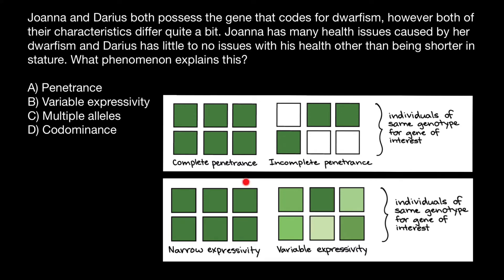But what about narrow expressivity? Imagine that here each box stands for a person. If these people got a defective allele, they would all uniformly express this genetic disorder, and we say they would have the same syndrome.